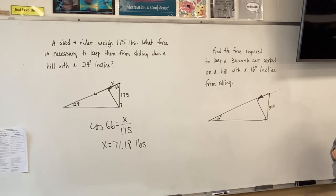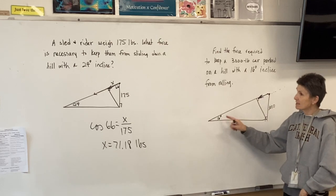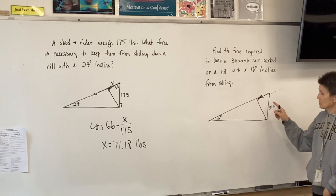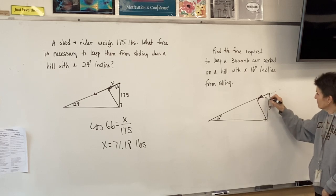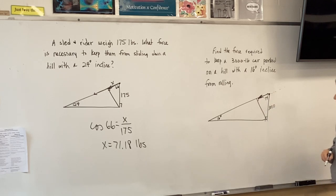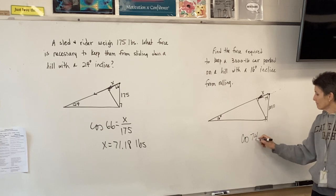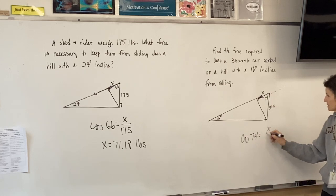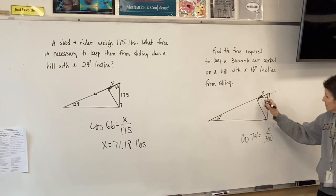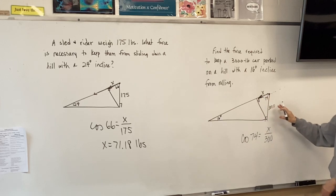So if that's 16, this one's going to be what, 74? Gosh, I hope I'm adding right. And we want to find this right here, so we can do the same thing we did last time. Cosine 74 equals adjacent over hypotenuse, because in the little triangle this is the hypotenuse.